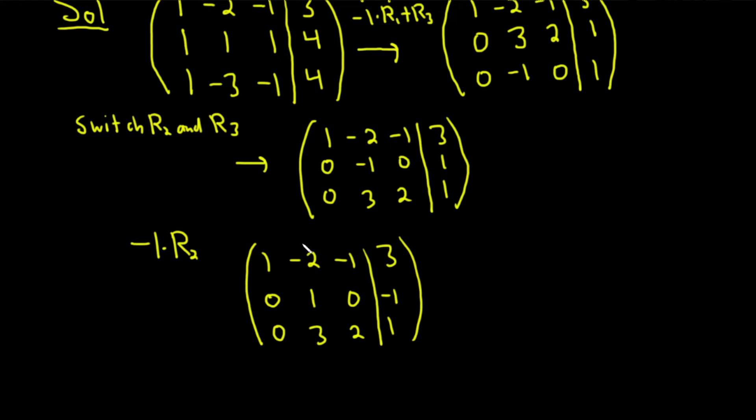Now we need to make this negative 2 up here a 0. And the 3 down here needs to be a 0. So let's go ahead and make that happen. We're going to use this 1 to do it. So we'll do 2 times row 2 plus row 1. That's going to get rid of the negative 2. And we'll do negative 3 times row 2 plus row 3. That's going to get rid of the 3.